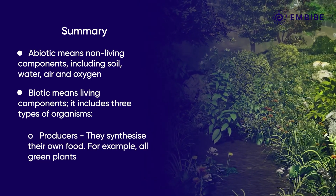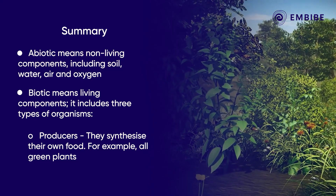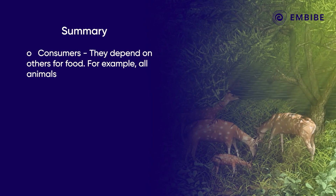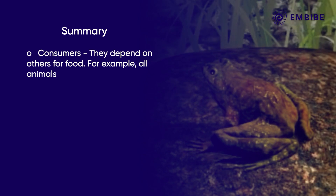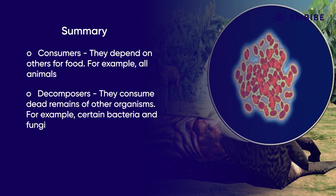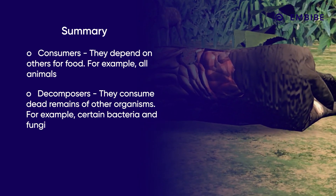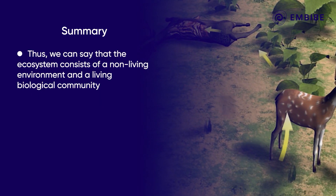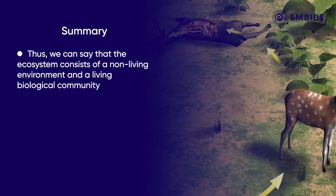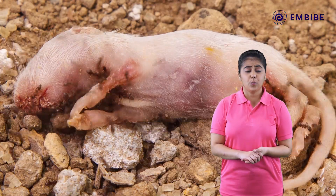Biotic means living components. It includes three types of organisms: producers, which synthesize their own food — for example, all green plants; consumers, which depend on others for food — for example, all animals; and decomposers, which consume dead remains of other organisms — for example, certain bacteria and fungi. Thus the ecosystem consists of a non-living environment and a living biological community.